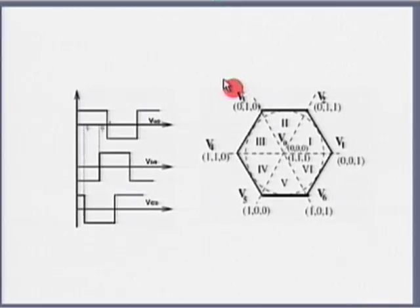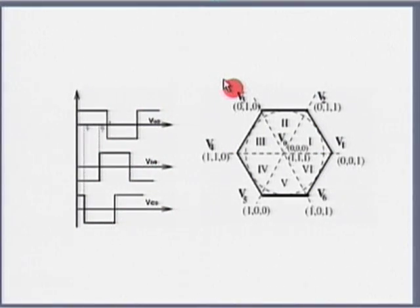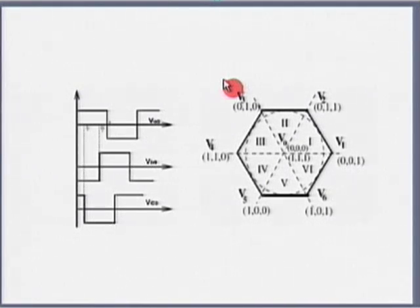This switching frequency is fixed based on the power level. At low power levels it could be high, and as the power level increases we need to reduce the switching frequency. The magnitude of the output voltage depends on the magnitude of the sinusoid or the modulating wave. If I want constant magnitude, I need to keep the magnitude of the sinusoid constant. This is the sinusoidal PWM technique.